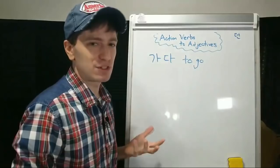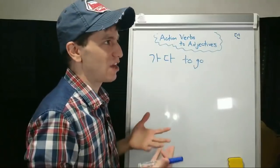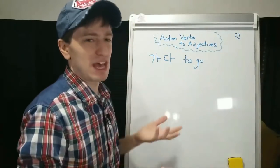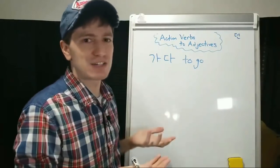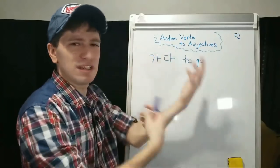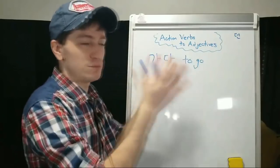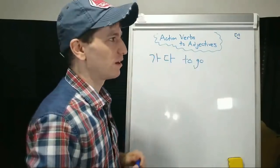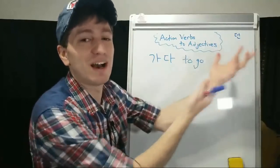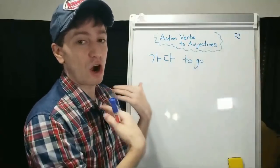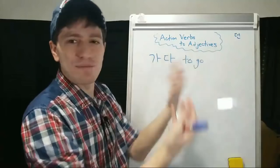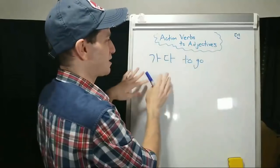Anything that's not an action verb is anything that's not an action. For example, to be pretty, 예쁘다, is not an action verb because you're not doing pretty — you're just to be pretty, you are pretty. Or to be hungry — you're not doing hungry, you just are hungry. Something that describes you or describes something is not an action verb.